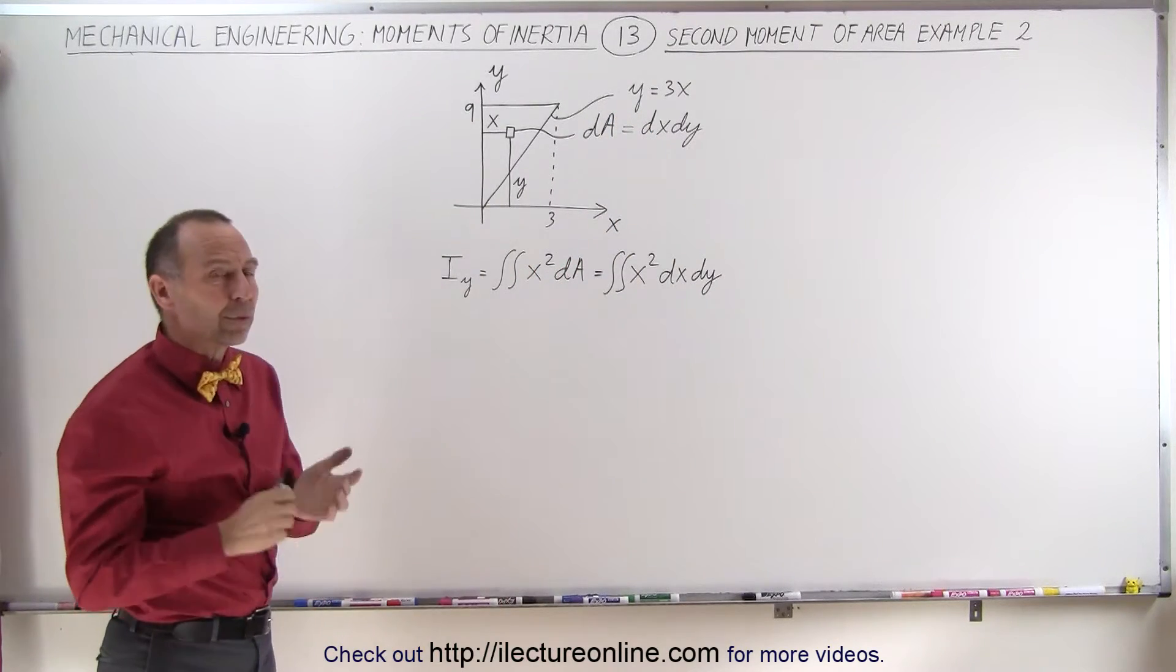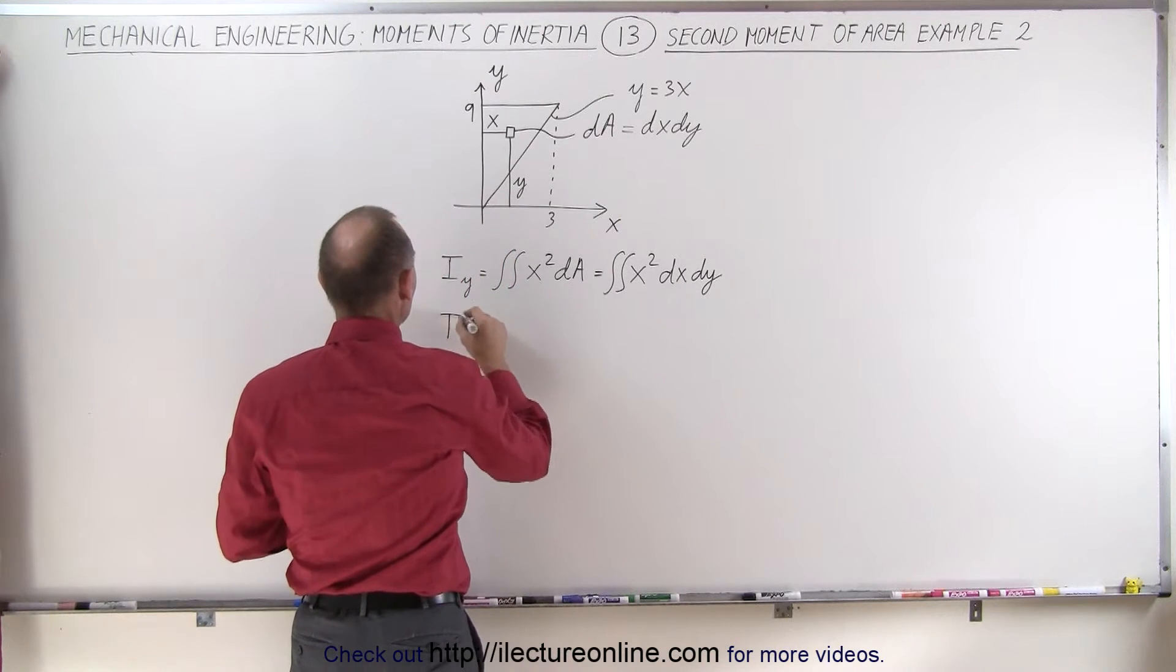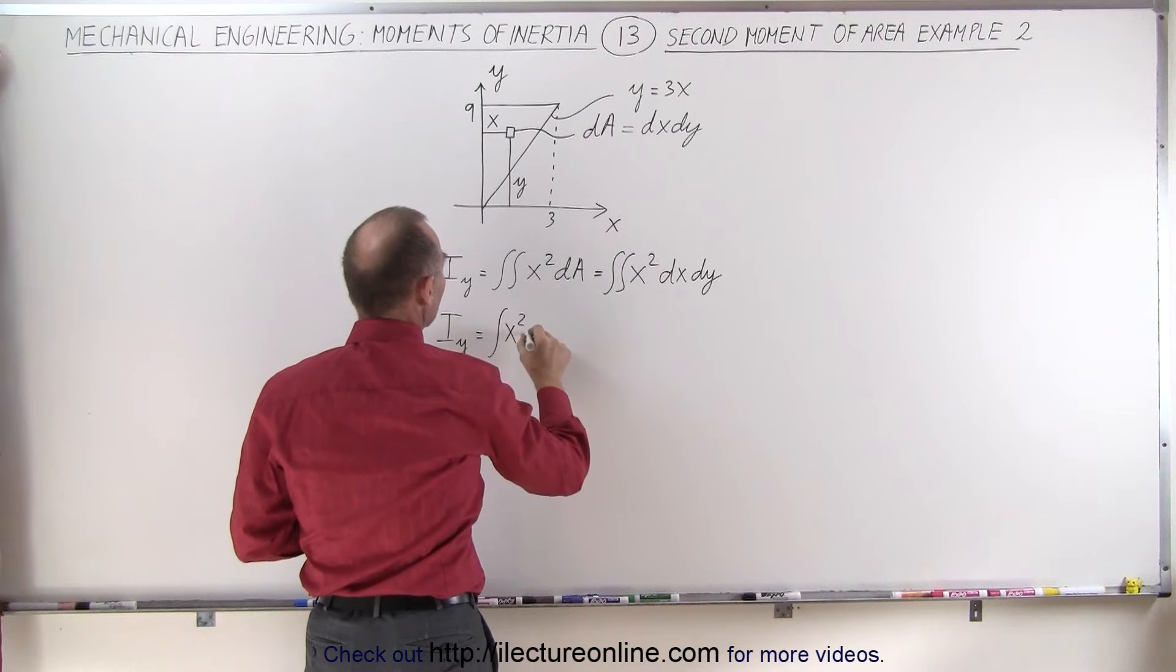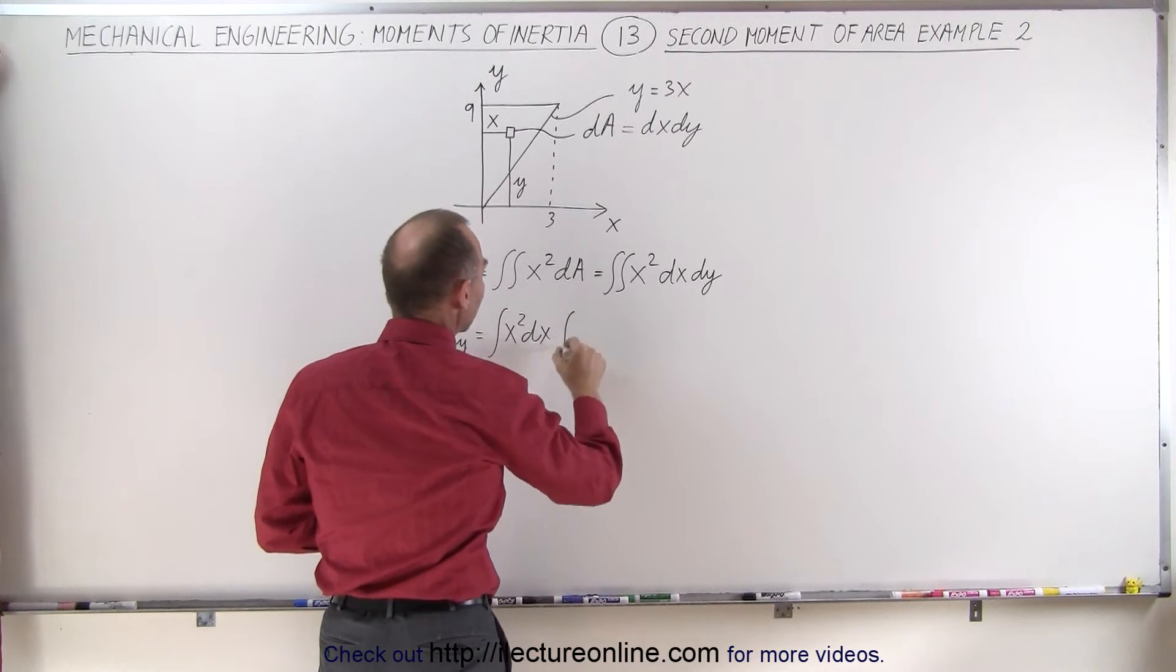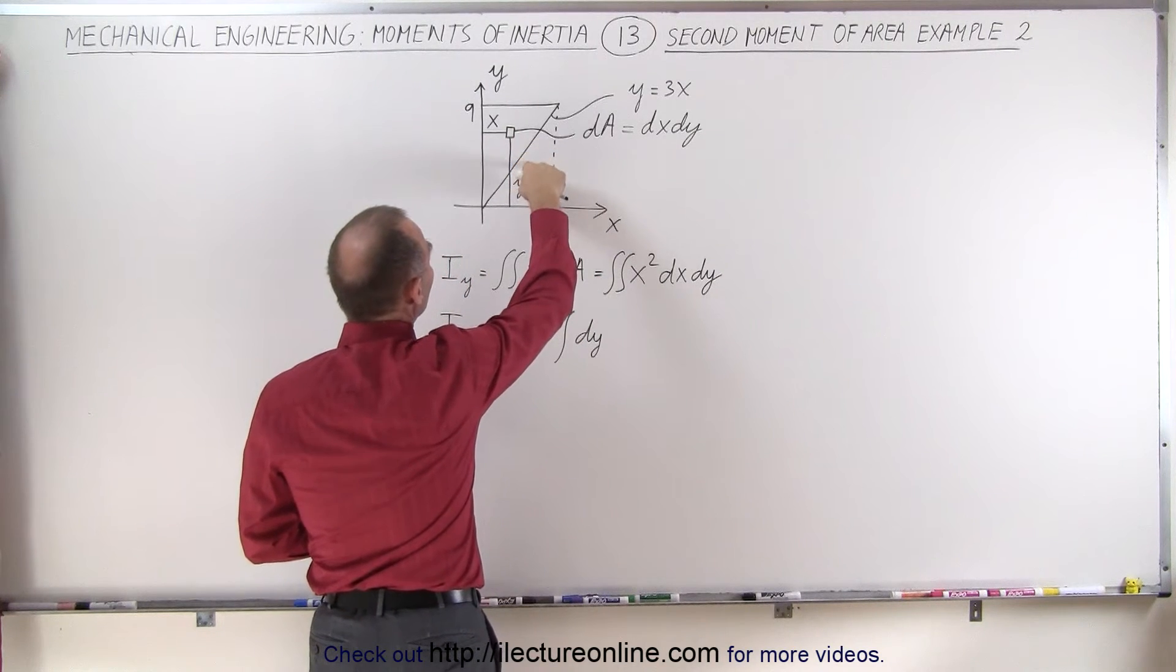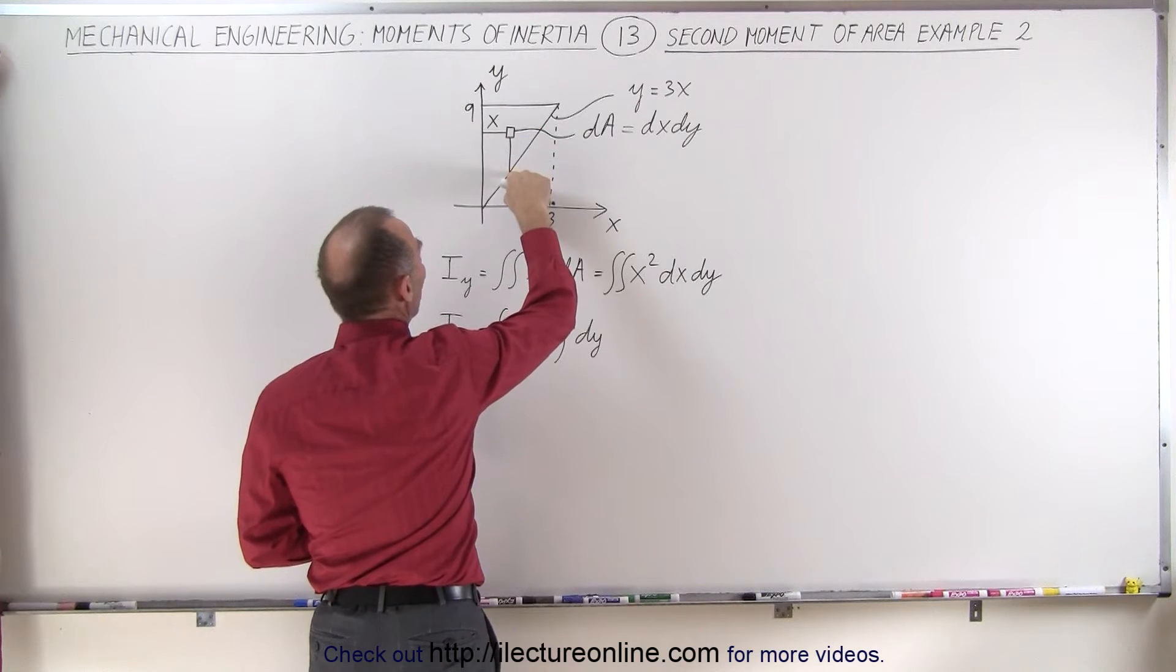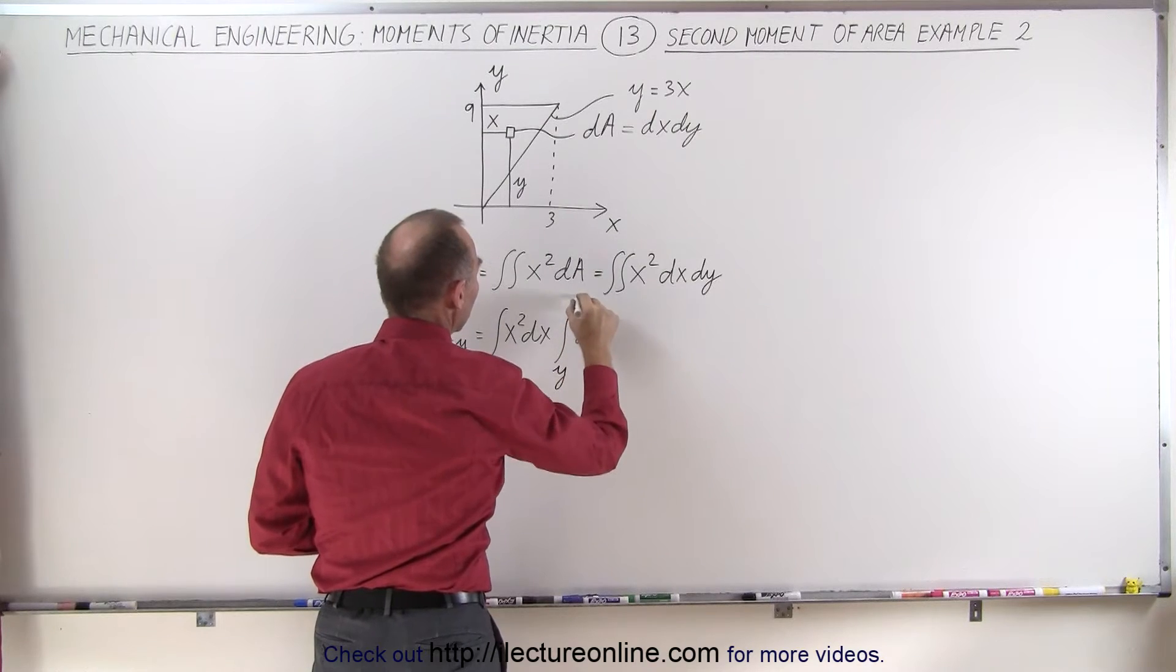So what we're going to do is first integrate our dy, so we're going to rewrite this as I_y equals the integral of x squared dx, and we'll worry about the limits later, times the integral of dy. And dy is going to be integrated from this point to this point - this point here y equals y, and there y equals 9, so the limits are from y to 9.